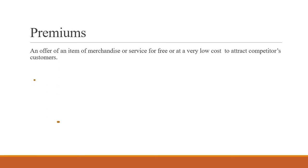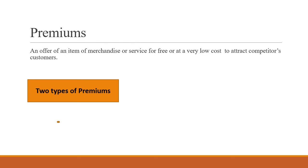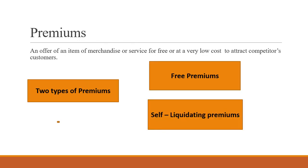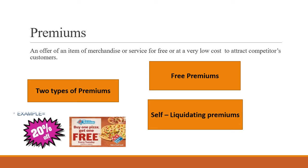Next, premiums. Premiums are offered free or at minimum cost as a bonus. There are two types: free premiums and self-liquidating premiums. Free premiums only require purchase of the product — for example, buy one pizza and get one free. Self-liquidating premiums require customers to pay some or all of the cost — for example, if you buy a blazer above 5000 rupees, you get 20 percent off.